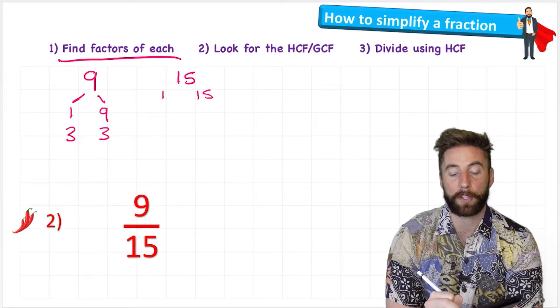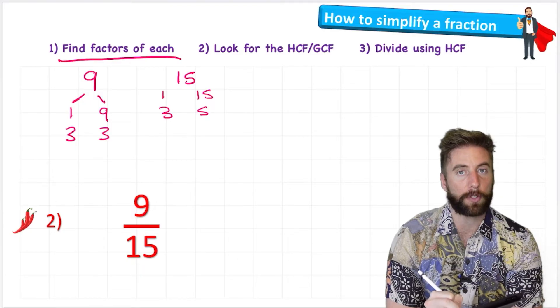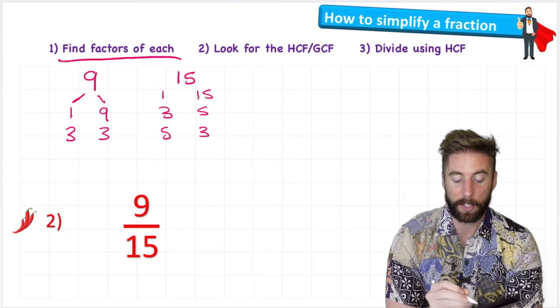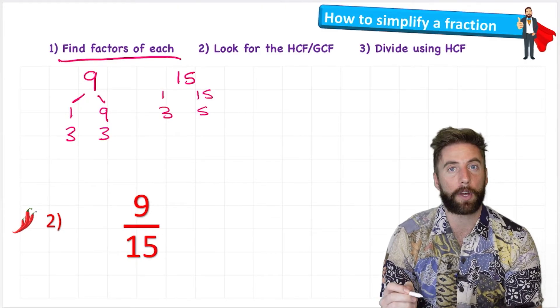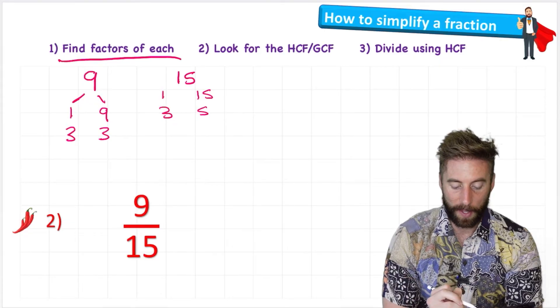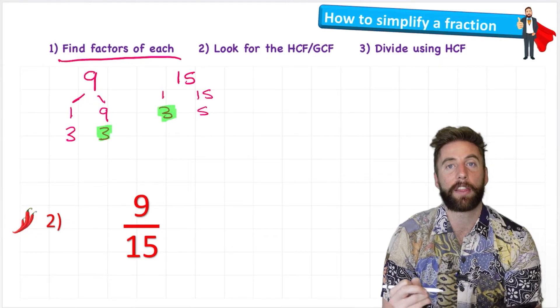Two doesn't work because it's an odd number. Three times five. Four doesn't work, and five would only be times three, so we know we don't need that. So these are the only factors of 15. Now I'm going to look for the highest common factor, and I can see that in this case it is actually again three.